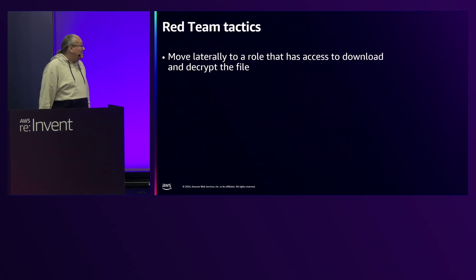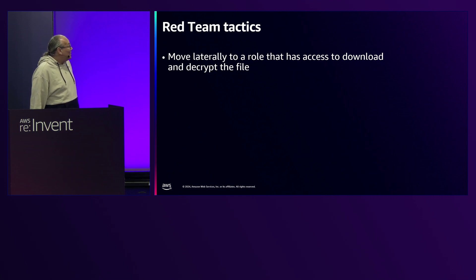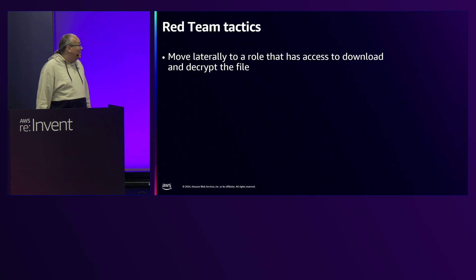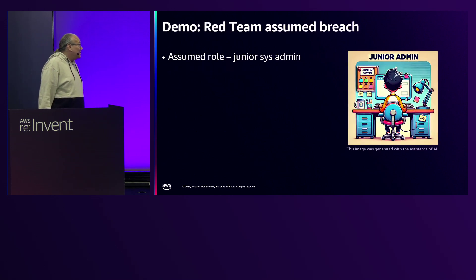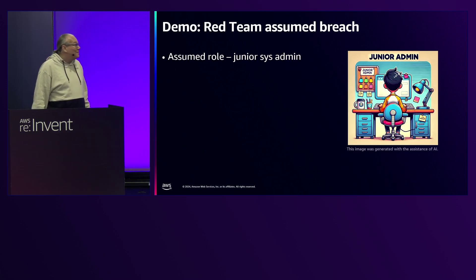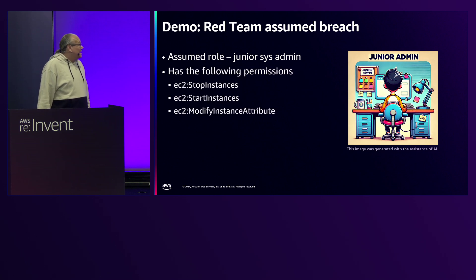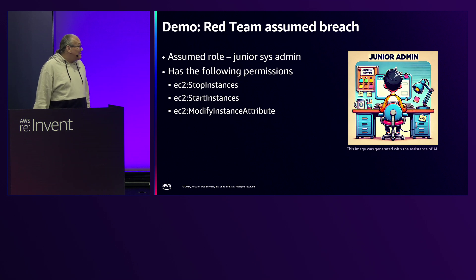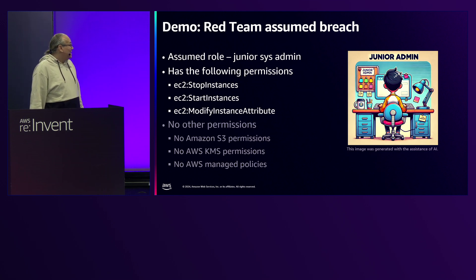Now let's look at a red team tactic. To get a file from S3, we'll have to move laterally to a role that could download the file and decrypt it. In red team, we often start with an assume breach scenario — we're going to assume the role of a junior system admin. It will only have three permissions, all related to EC2: start and stop instances, and modify instance attribute. No S3 permissions, no KMS permissions.